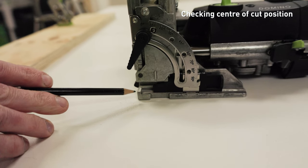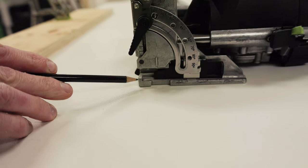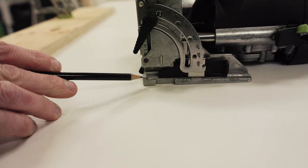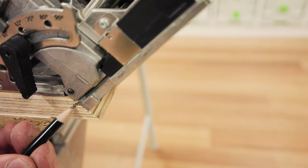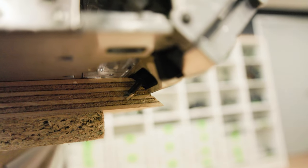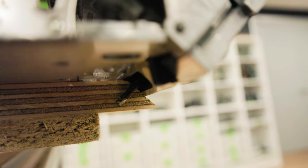When wanting to reference the centre of a cut, it can be checked with the scribe mark on the plate. This can help with alignment of angle cut positions when needing to check distances and depths of cut for domino choice.